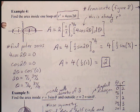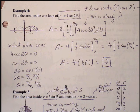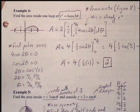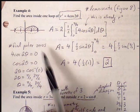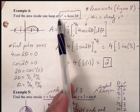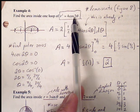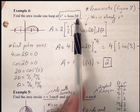Example 4: Find the area inside one loop of r squared equals 4 cosine of 2 theta.